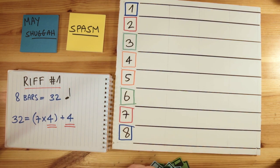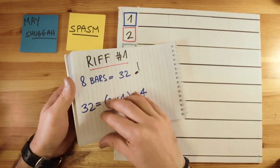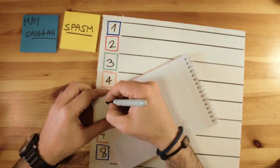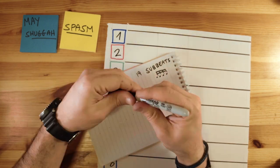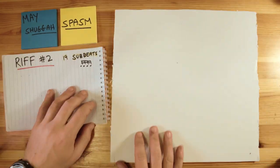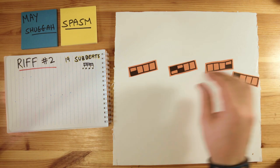The next riff is shorter. It's that epic verse riff. It's 19 beats long, but it's sub-beats actually, the smaller portions. So sixteenth notes if you will. This one looks like this.